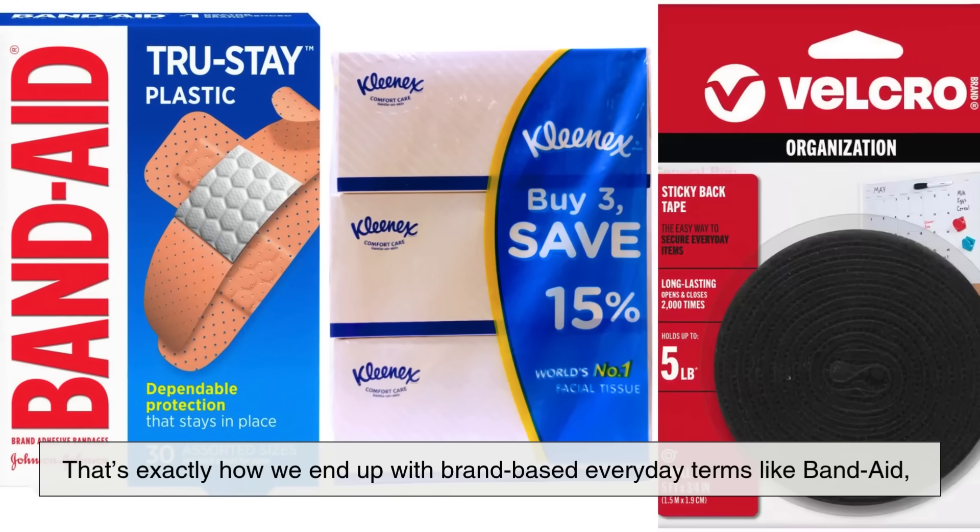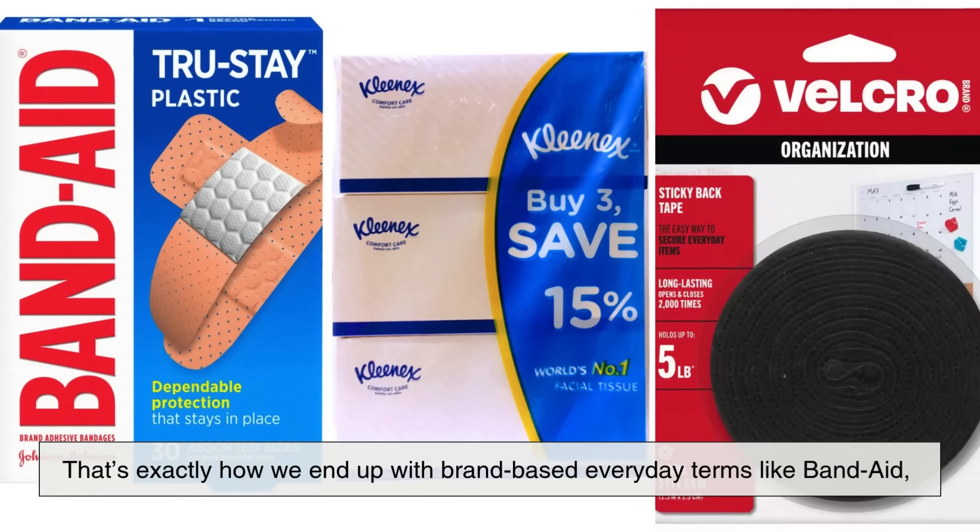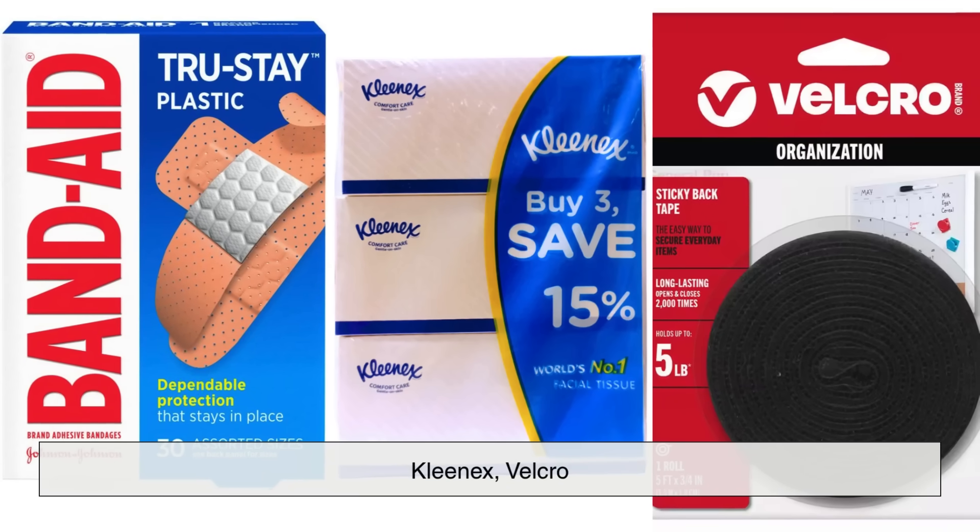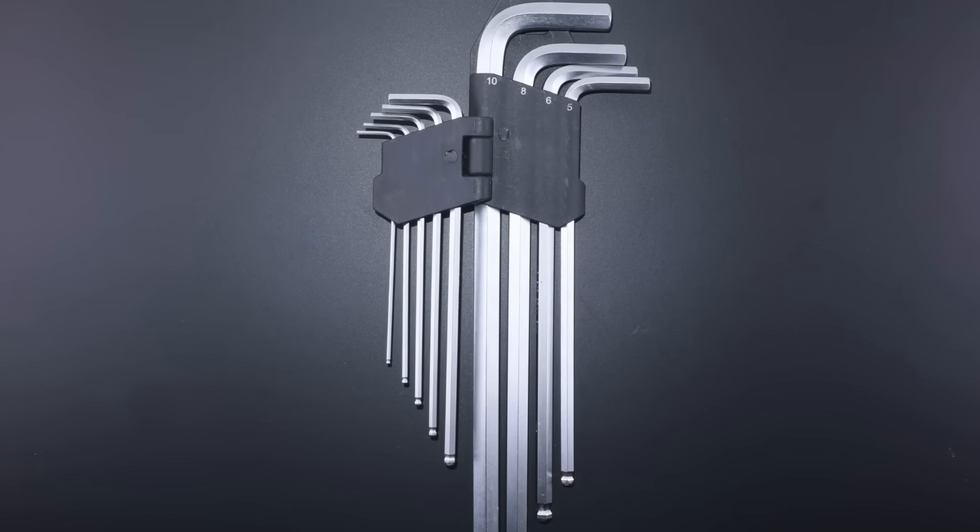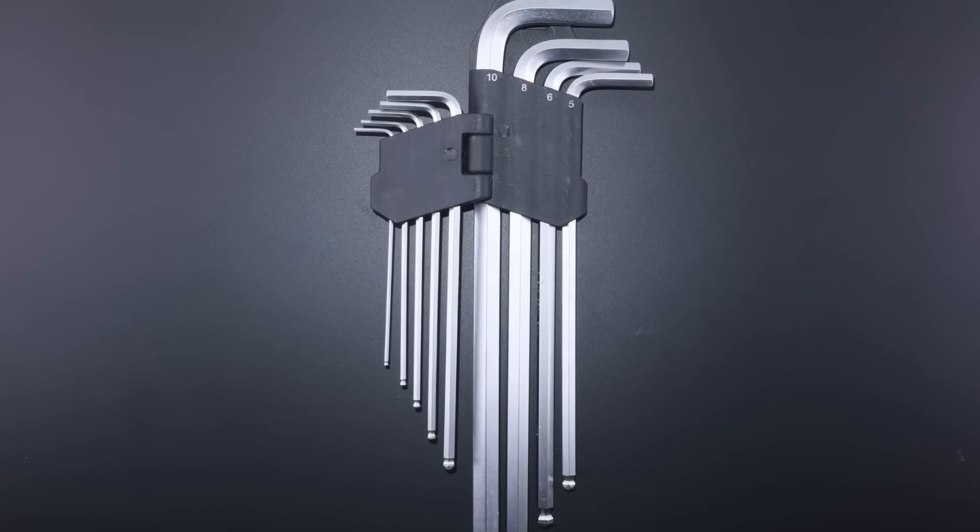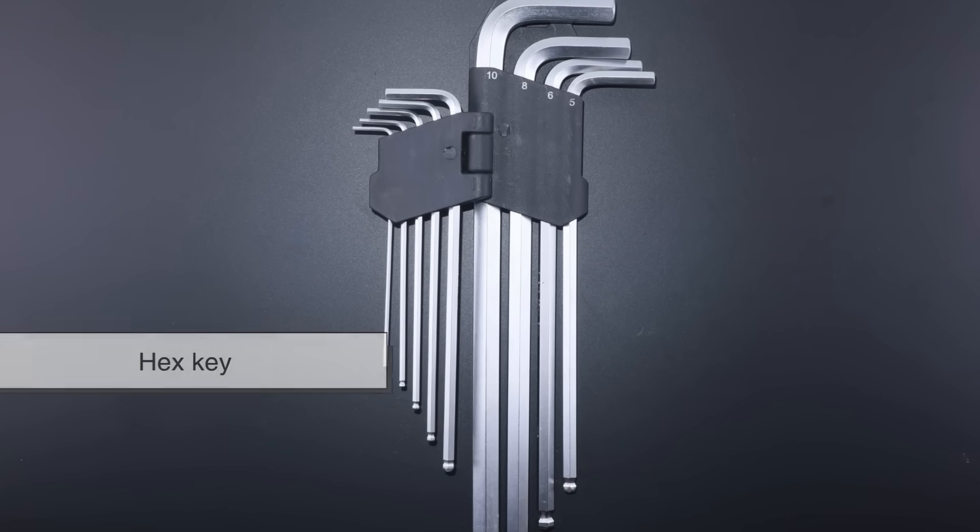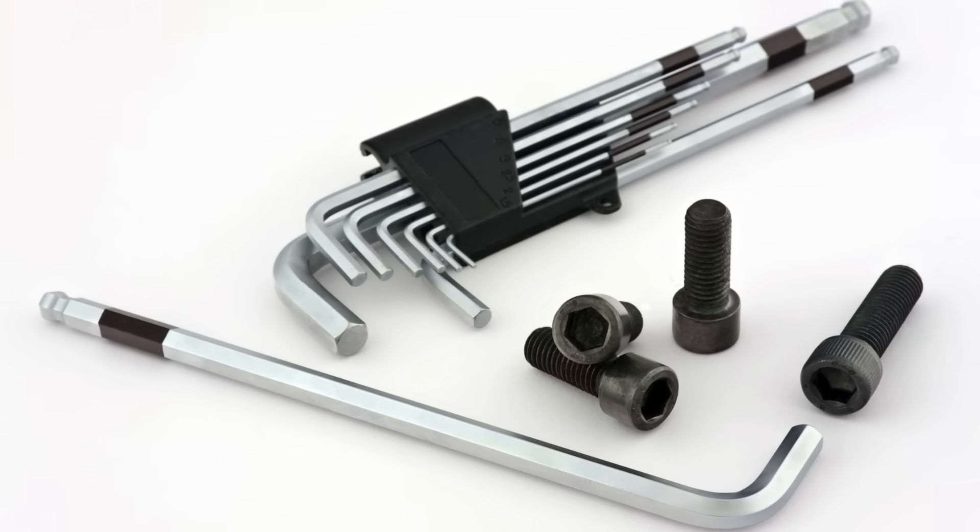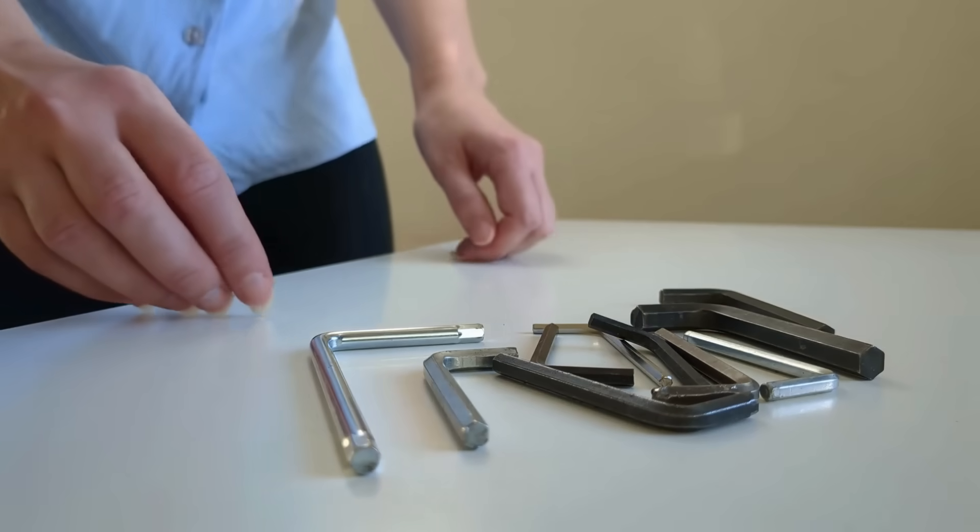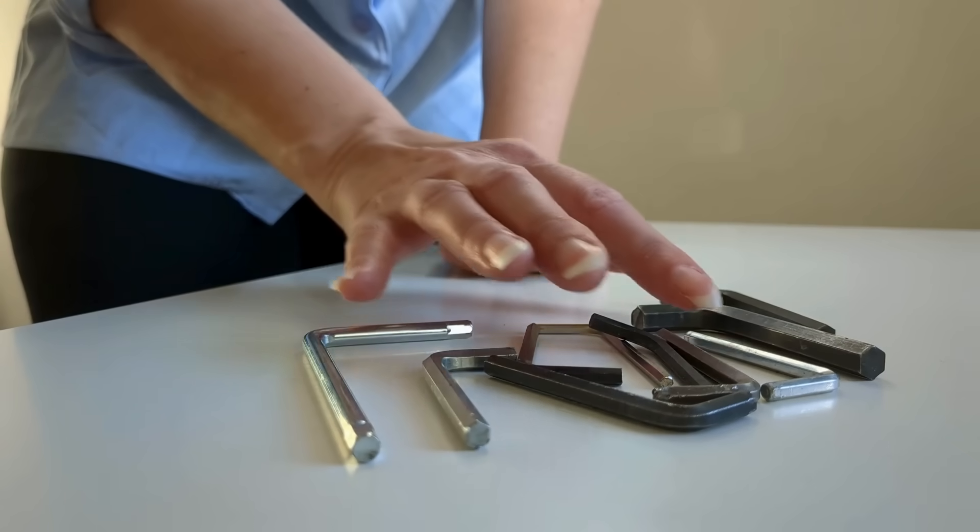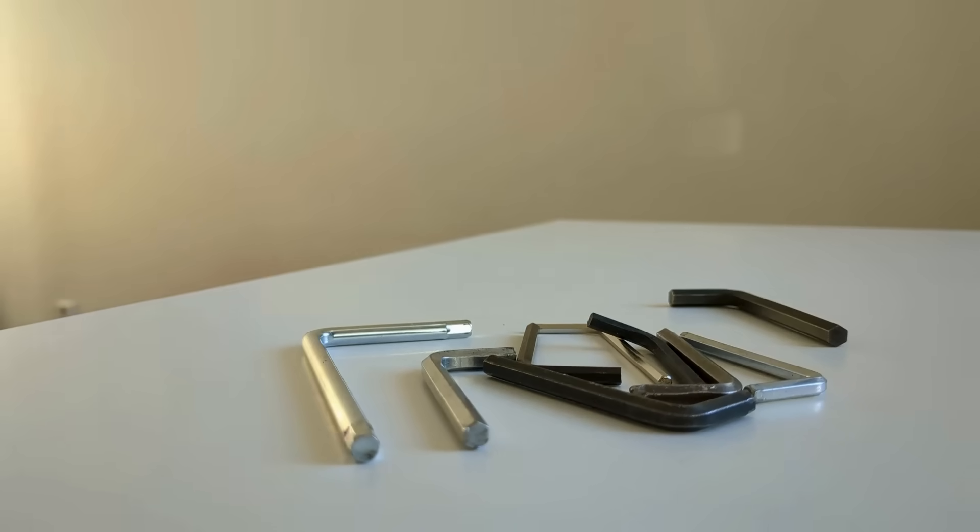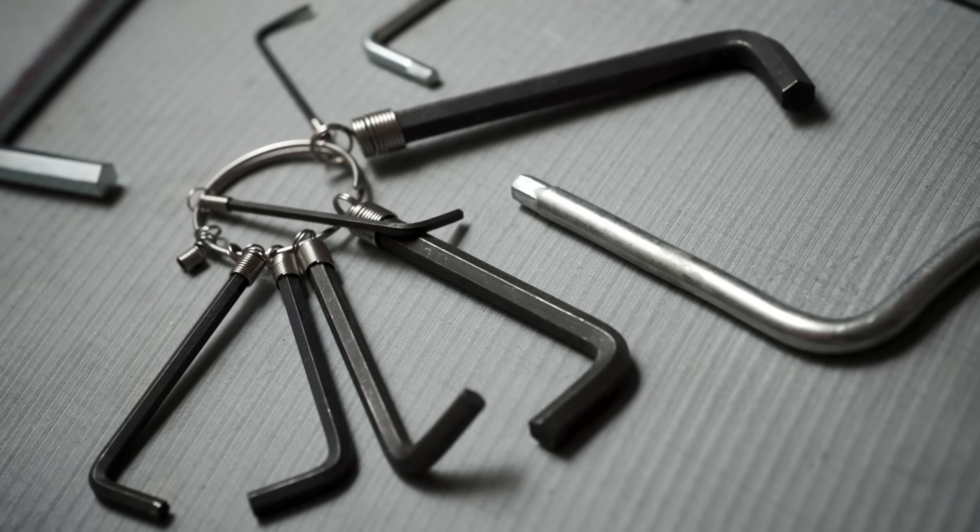That's exactly how we end up with brand-based everyday terms like Band-Aid, Kleenex, Velcro, and yes, Allen wrench. Technically, the more universal and correct name for the tool is the hex key, because it's a key-shaped tool for hexagonal screws. But the popularity of Allen safety screws in early industrial America meant the name Allen wrench stuck, especially in the US.